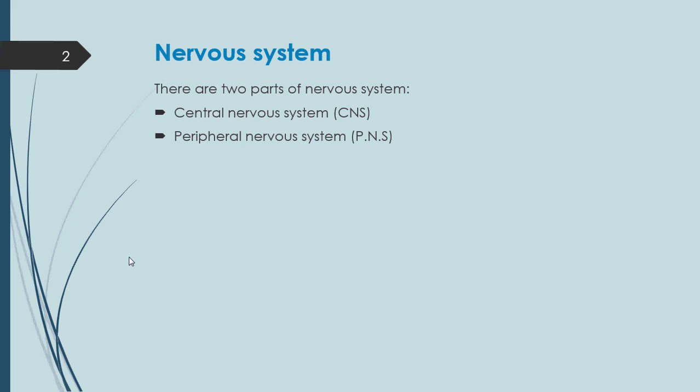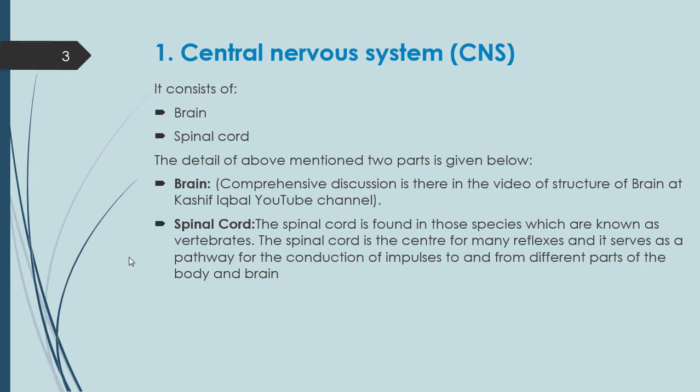The Central Nervous System consists of: number one, the Brain — I have already uploaded a detailed structure of the brain on the YouTube channel Kashif Iqbal, so you can check it out for comprehensive details — and number two, the Spinal Cord.